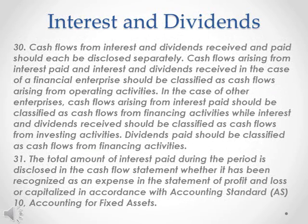Interest and Dividends. Para 30. Cash flows from interest and dividends received and paid should each be disclosed separately. Cash flows arising from interest paid and interest and dividends received in the case of a financial enterprise should be classified as cash flows arising from operating activities. In the case of other enterprises, cash flows arising from interest paid should be classified as cash flows from financing activities, while interest and dividends received should be classified as cash flows from investing activities. Dividends paid should be classified as cash flows from financing activities.